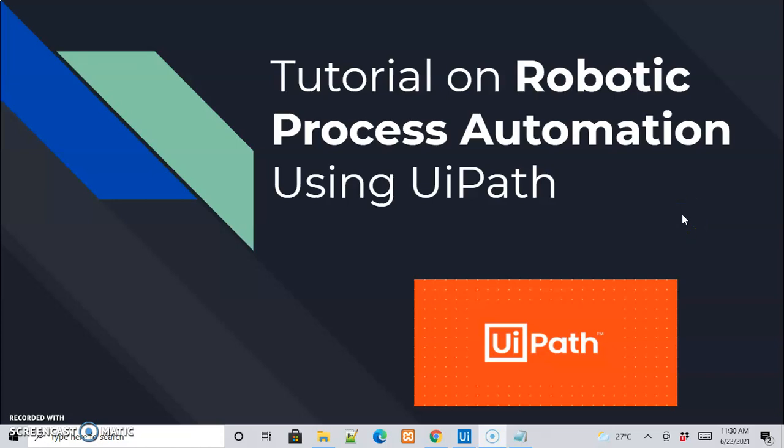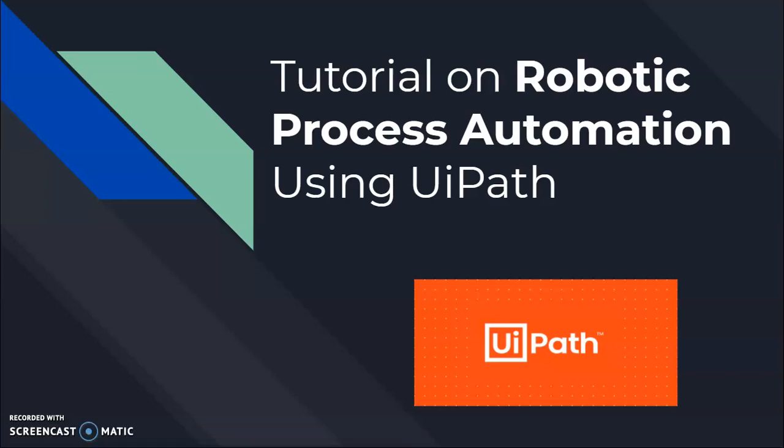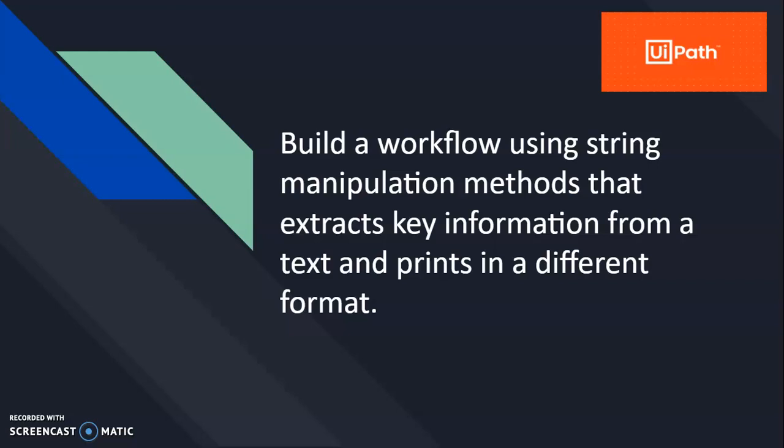Hello and welcome to the tutorial on robotic process automation using UiPath. In this session we will consider an example to build a workflow using string manipulation methods that will extract key information from a text and print it in a different format. We are considering a text containing few sentences, and from that text we will try to extract some key information and then print it in a different format using the string manipulation methods.